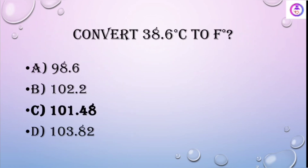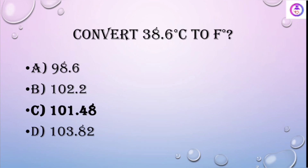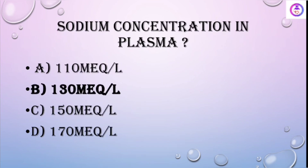Convert 38.6 degrees Celsius to Fahrenheit: the answer is 101.48 degrees Fahrenheit. Sodium concentration in plasma is 130 milliequivalents per liter.